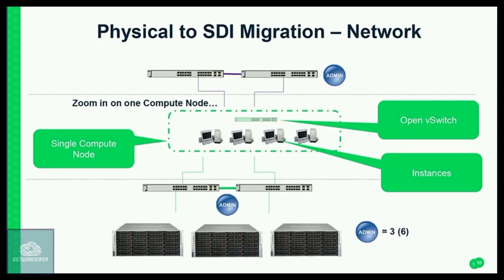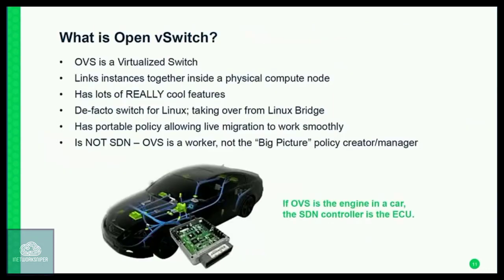I'm going to turn it over to Mark, and he's going to drill into the actual Open vSwitch part of this configuration. What we're doing is zooming in on one compute node. Those little machines basically show you what a compute instance is sitting on top of an OpenStack compute node. These need to talk to each other somehow. If you've got east-west traffic happening just within that one node, Open vSwitch provides you with potentially faster-than-line-rate communication between these instances.